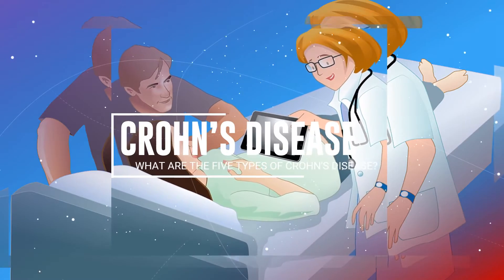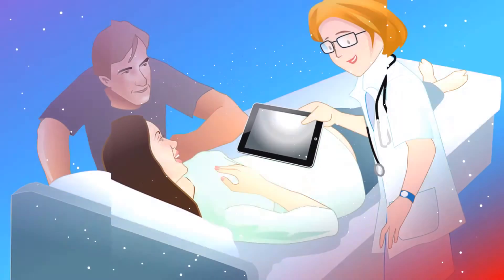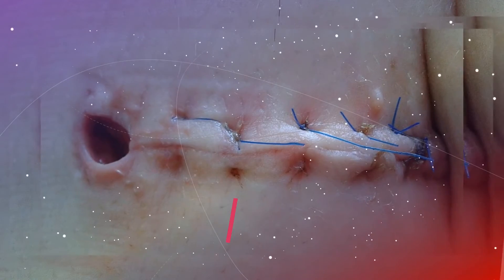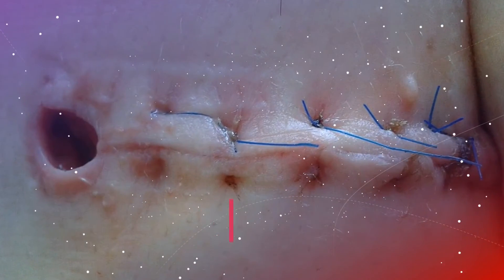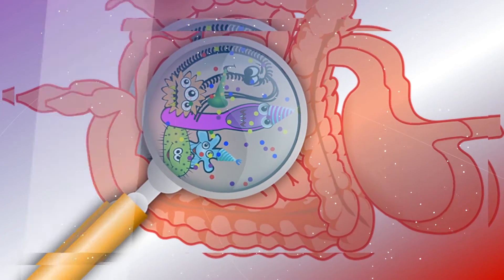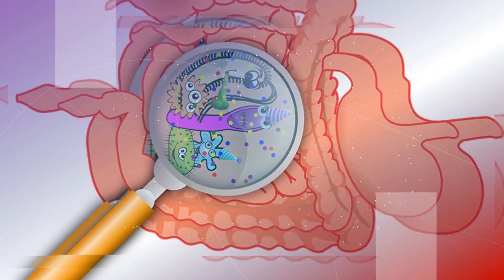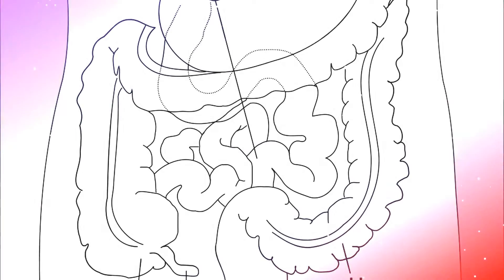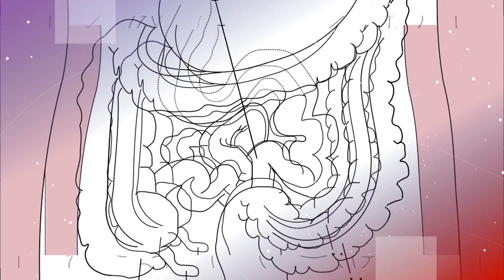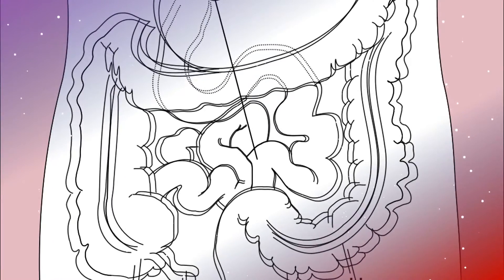What are the 5 types of Crohn's Disease? The 5 types of Crohn's Disease and their symptoms are: 1. Ileocolitis. Ileocolitis is the most common type of Crohn's Disease. It affects the small intestine, known as the ileum, and the colon. People who have ileocolitis experience considerable weight loss, diarrhea, and cramping or pain in the middle or lower right part of the abdomen.